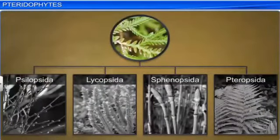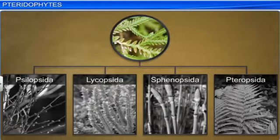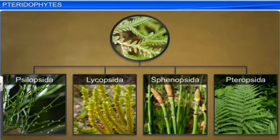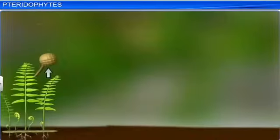These pteridophytes are categorized into four classes: the Psilopsida, with the best example being Psilotum; the Lycopsida, with examples of Selaginella and Lycopodium; the Sphenopsida, that is Equisetum; and the Pteropsida, with examples of Dryopteris, Pteris, and Adiantum. So these are the four major classes with their respective examples.